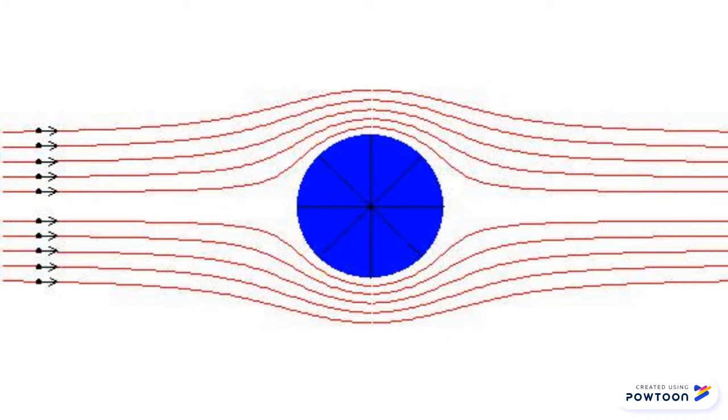When a static cylindrical body is present within a fluid stream, the magnitude of the wind velocity is evenly distributed on the upper and lower surfaces of the body.